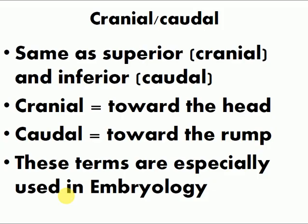Cranial and caudal are terms used more especially in embryology, used alternatively with superior and inferior. In embryology we use cranial and caudal rather than superior and inferior. Cranial simply means towards the head, and caudal means towards the rump or tail. For human beings, since we don't have a tail, we say towards the rump instead of towards the tail.